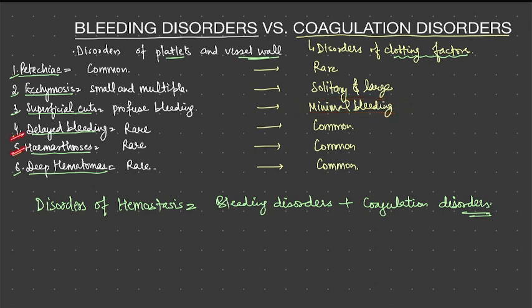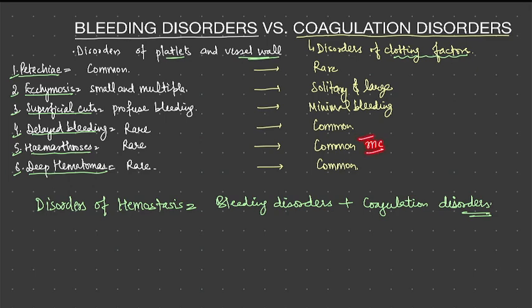The remaining three clinical features — delayed bleeding, hemarthrosis, and deep hematomas — are very rare in bleeding disorders but very common in coagulation disorders. Hemarthrosis is in fact the most common presenting complaint of coagulation disorders.